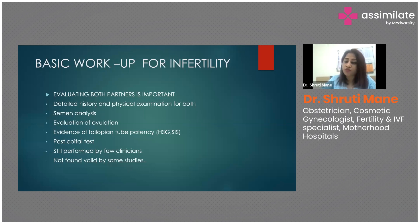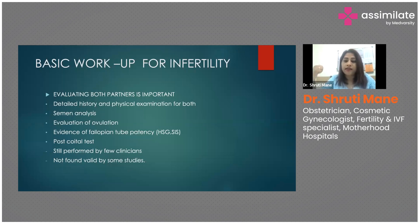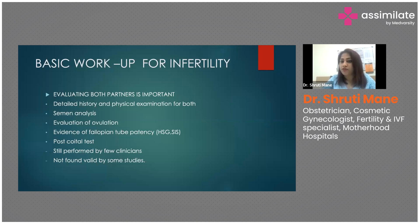Physical examination of the female partner involves checking the cervix and vagina for local causes — cervical erosion, vaginal septum, or sources of infection. For the male partner, you evaluate testicular size, presence of vas deferens, infections such as epididymitis, hydrocele, or hernia. These findings can be assessed through physical examination of both partners.